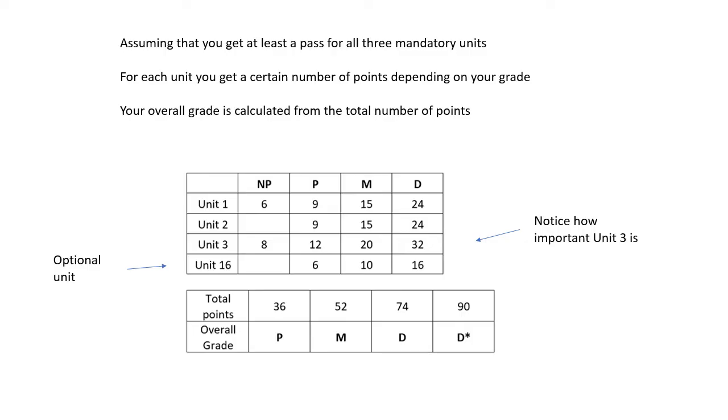Notice how important unit three is. Yeah. Unit three is worth more than unit two or unit one. And it's worth twice as much as the optional unit. For example, unit 16, which is the one I usually do, the astronomy. Notice how important unit three is. You can make up an awful lot of ground if you do well on unit three. And it's easy. It's a lot easier, I think, than any of the other units.